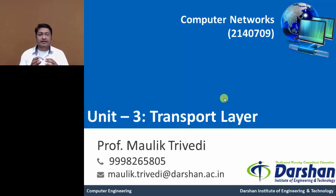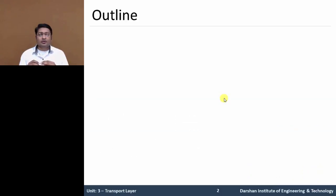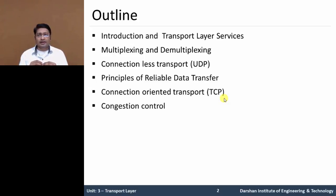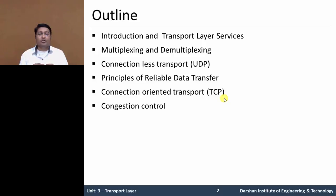Hello everyone. In this video, we will discuss Unit 3: the transport layer in computer networks. The topics to be covered in this chapter include: introduction to the transport layer, transport layer services and protocols, multiplexing and demultiplexing, connectionless transport protocol UDP, principles of reliable data transfer (RDT), connection-oriented transport protocol TCP, and congestion control and flow control.